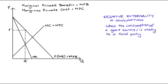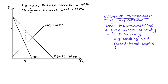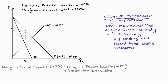When we have a negative externality in consumption, it's the consumption of a good that is harmful or costly to a third party. The classic example is smoking — in consuming a cigarette, I produce secondhand smoke that can be inhaled by others and harm them. In order to include this externality on our diagram, we need to introduce our marginal social benefit function.